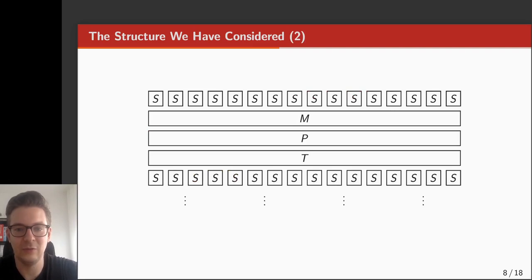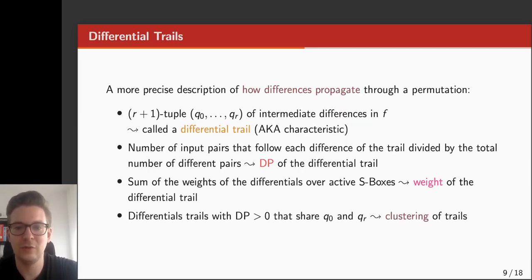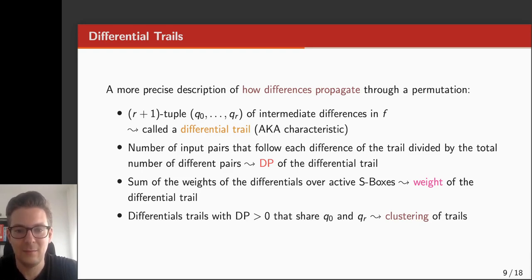The following figure illustrates this composition. There is a first nonlinear layer consisting of the parallel application of a number of S-boxes, followed by boxes for the mixing layer, the permutation layer, and the translation. This structure is repeated for the number of rounds chosen. Given that the permutation is composed of a number of rounds, it is possible to specify an intermediate difference for each intermediate state, leading to an R+1 tuple of differences, where R is the number of rounds. This is called a differential trail, also known as a differential characteristic.